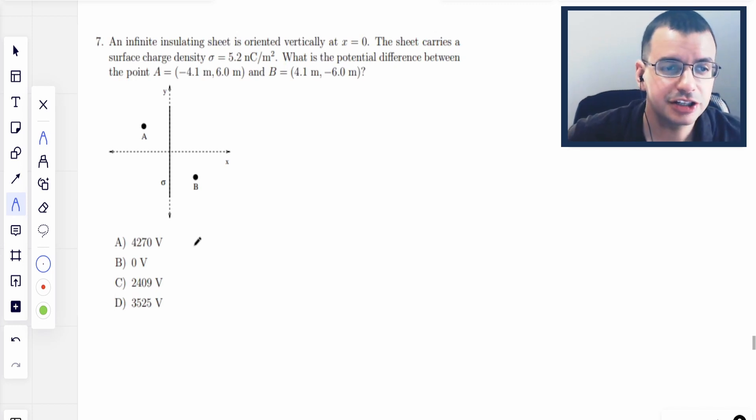An infinite insulating sheet is oriented vertically at x equals zero. The sheet carries a surface charge density of sigma, which is 5.2 nanocoulombs per square meter. What is the potential difference between points A and B? A potential difference, that basically means voltage.